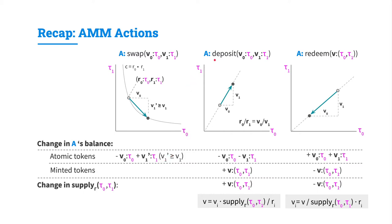In the deposit action, the user is supplying atomic tokens to the system, allowing future users to perform swaps. User A deposits V0 units of τ0 and V1 units of τ1. Assuming the initial reserve ratio is R0 over R1, the deposit action is only enabled if the ratio of added tokens V0 and V1 equals the ratio of current reserves. Following execution, A's atomic token balance is reduced by V0 and V1, and A obtains V units of minted tokens of type τ0τ1.